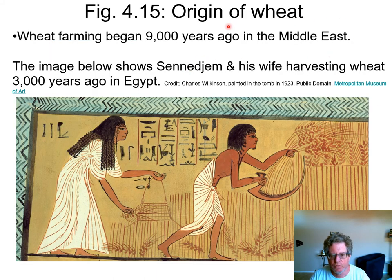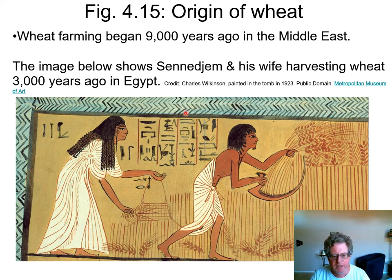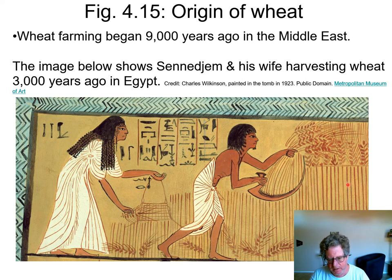The origin of wheat is in the Middle East, domesticated about 9,000 years ago. Someone made a drawing of a painting on the wall of a tomb — that tomb was from somebody who died 3,000 years ago, and the drawing was done in the 1920s. It shows the person who died harvesting wheat.